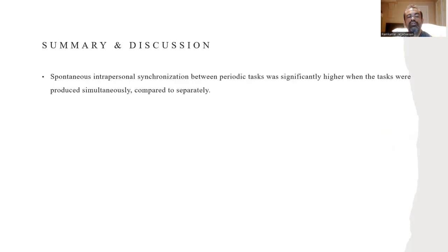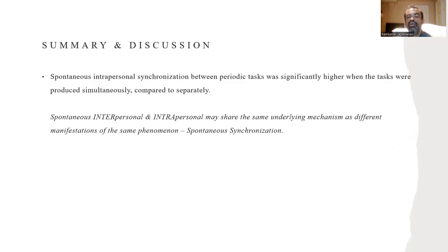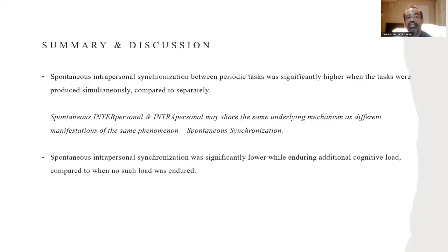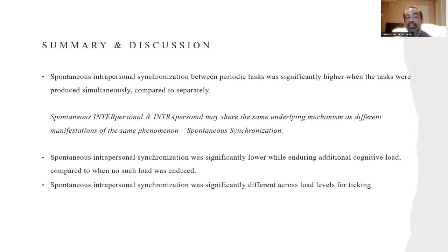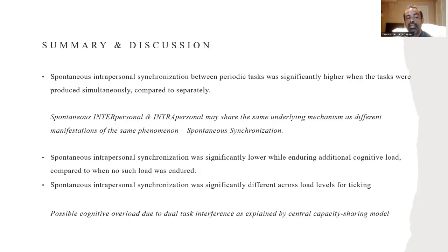In summary, the main result was that spontaneous intrapersonal synchronization between periodic tasks was significantly higher when the tasks were produced simultaneously compared to separately, supporting hypothesis one. Based on this, we think spontaneous interpersonal and intrapersonal synchronization may be the same phenomenon but just different manifestations, as they seem to share the same underlying mechanism. The other main result was that spontaneous intrapersonal synchronization was significantly lower while enduring additional cognitive load — the absolute opposite of hypothesis two. Also, spontaneous intrapersonal synchronization was significantly different across load levels for the ticking task, possibly due to cognitive load during dual task interference as explained by the central capacity sharing model.